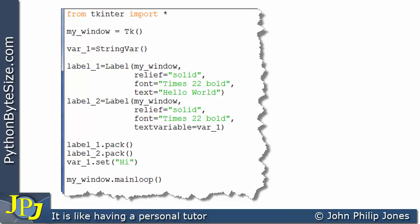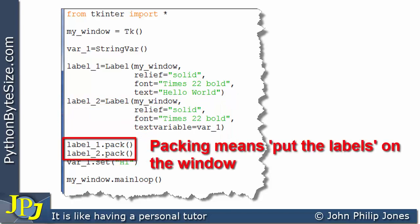Let's consider this computer program and have a quick overview of it. Here you can see I'm creating an instance of a window. Here I'm creating an instance of a string variable. This creates a label. Likewise, this creates a label. And you can see that here we are packing both labels. I'll come on to what this does in a moment.